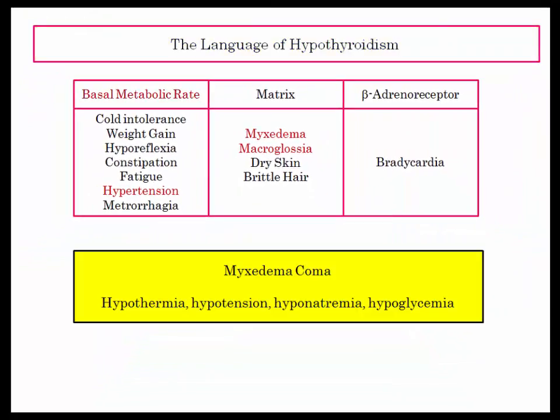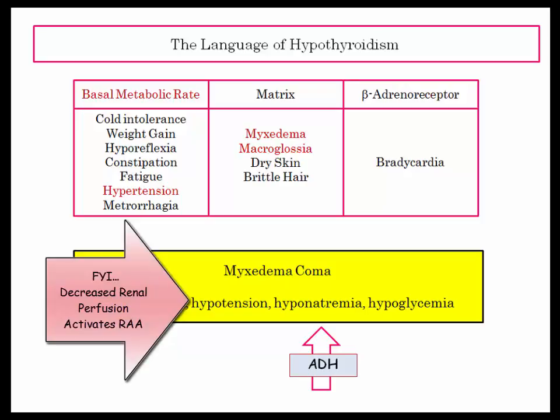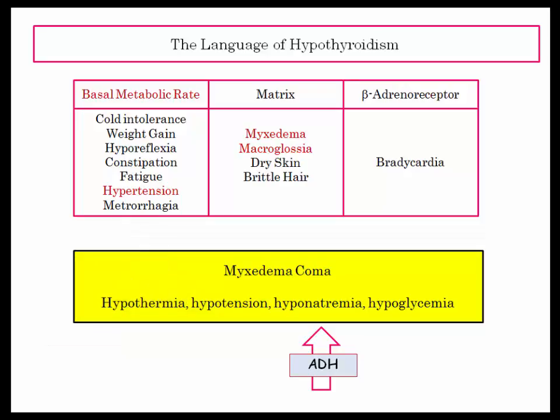Myxedema coma is an extreme form of hypothyroidism with complete absence of hormone. The patient experiences symptoms of hypothermia, hypotension, hyponatremia, and hypoglycemia. The hyponatremia is in part related to increased ADH from decreased renal perfusion and activation of central baroreceptors — reinforcing what you've learned about ADH.